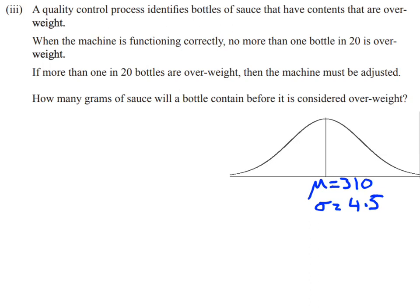So we've got some quality control process here, and it's talking about there should be 1 in 20 bottles considered overweight. Now if it's bigger than that, then we need to adjust the machine, but they define that overweight means 1 in 20. And so we want to know how many grams of sauce will a bottle contain before it's considered overweight.